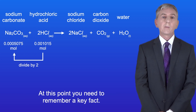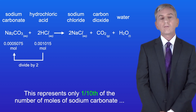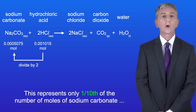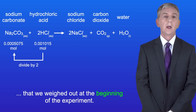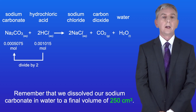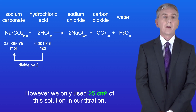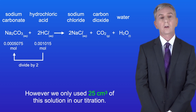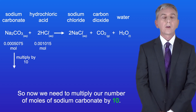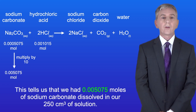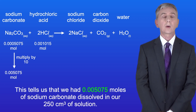At this point you need to remember a key fact: this represents only one-tenth of the moles of sodium carbonate we weighed out at the beginning of the experiment. We dissolved our sodium carbonate in water to a final volume of 250 cm³, but we only used 25 cm³ in our titration. So we multiply our moles of sodium carbonate by 10, giving us 0.005075 moles dissolved in the 250 cm³ solution.